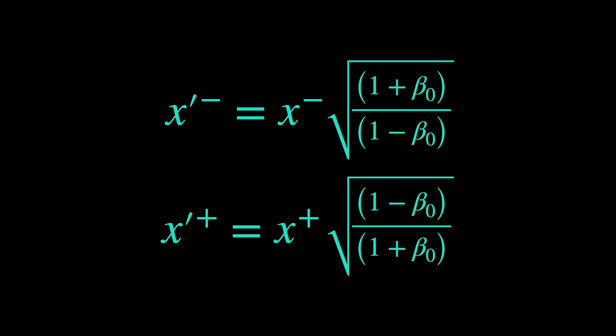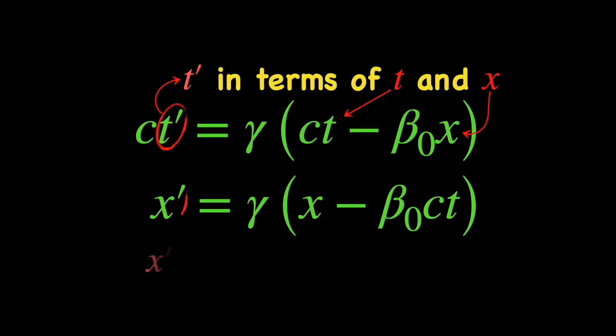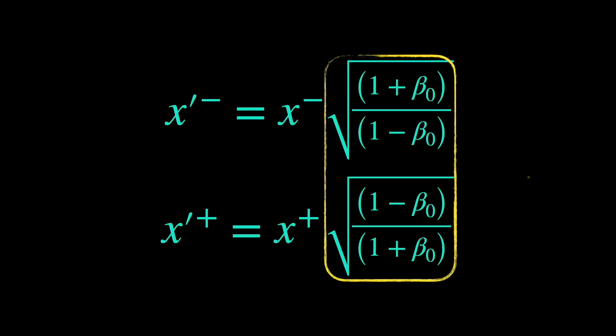The big deal is unlike the Lorentz transformation equations for ct and x which mix up these variables, as you can see, the x minus and x plus just get scaled by constant factors into x minus prime and x plus prime respectively. Therefore, the Lorentz transformation equations in terms of these light cone coordinates are way cleaner and simpler to use purely from the calculational standpoint. More importantly, this changes how we visualize the Lorentz transformation.